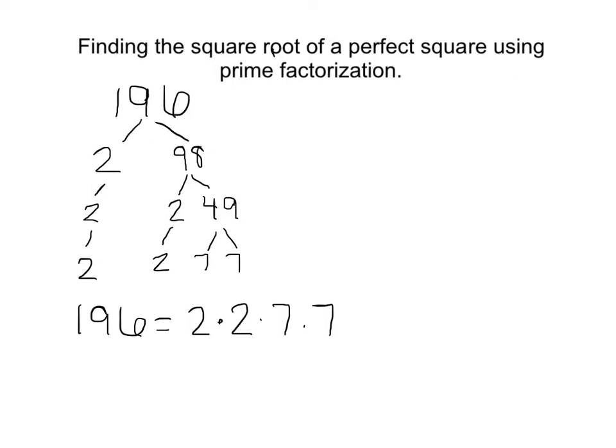So since multiplication is commutative, I can rewrite this as 2 times 7 times 2 times 7.